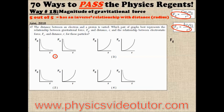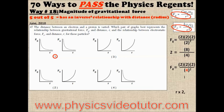Here's a hypothetical example of the relationship between gravitational force and radius using really easy numbers. When the radius is 2, the magnitude of the gravitational force will also be 2. But when the radius is doubled, the magnitude of the gravitational force is reduced by 4 times as much, thanks to the inverse square relationship.